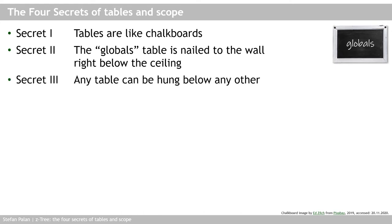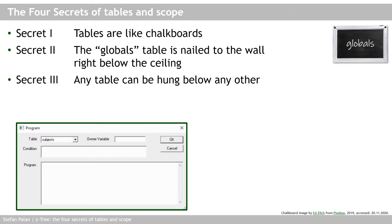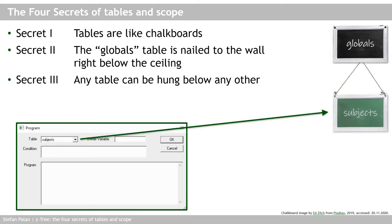Secret three: any table can be hung below any other. Imagine that all other tables in Ctree are on chalkboards with a piece of string attached, which can be used to hang them below the globals table chalkboard or any other chalkboard for that matter. Now the easiest way to hang a chalkboard on your wall in Ctree is to insert a new program. By default, this new program runs in the subjects table. What this means is that the first chalkboard we hang below our globals table is the subject table chalkboard.